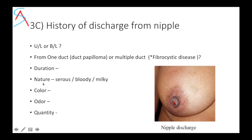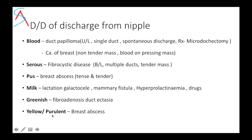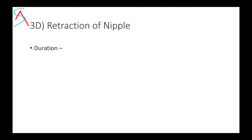Ask about the duration, nature, color, odor, and quantity of discharge. If it is bloody, the cause could be ductal papilloma from a single duct — spontaneous discharge — and the treatment is microdectomy. Then ask about retraction of nipple with duration, and history of any ulcer over the lump with its duration and progression.